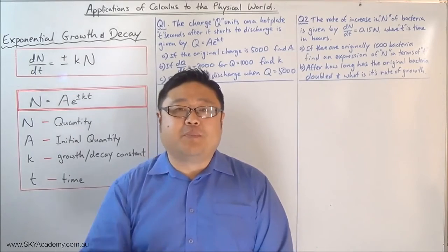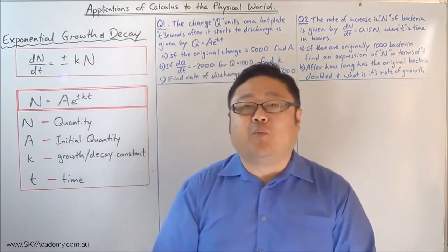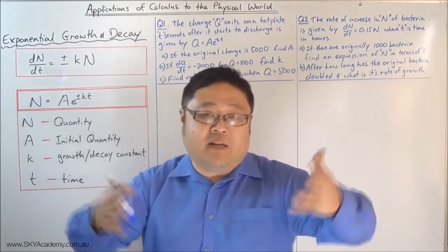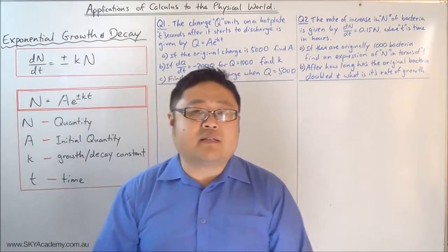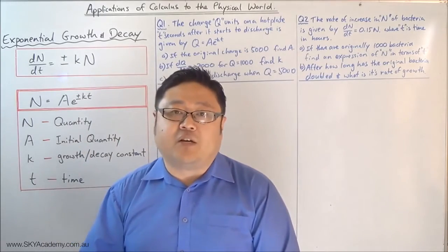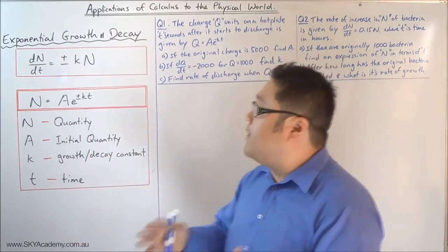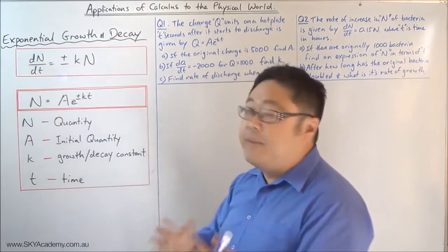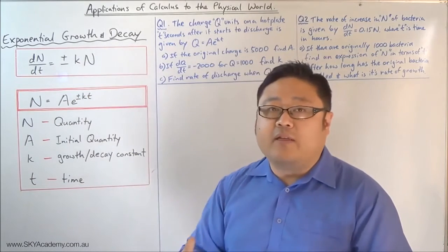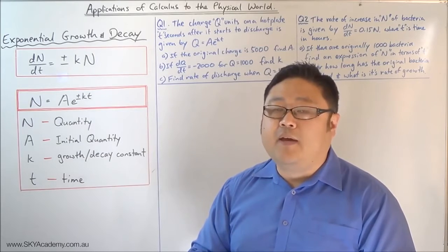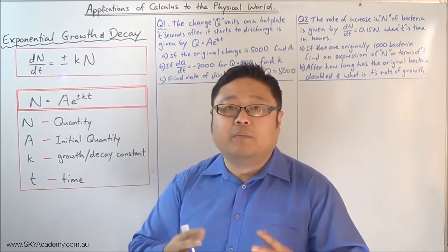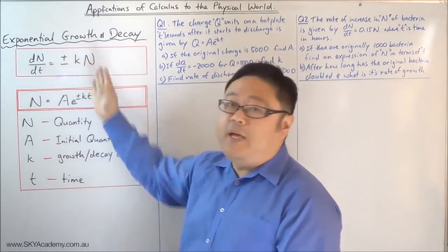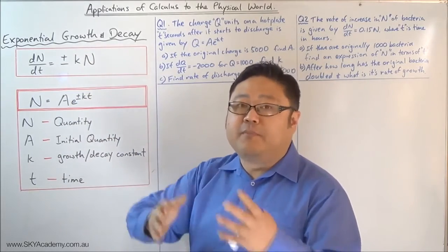Hi, this is Soong and I'm the principal and director of Sky Academy. In the last episode we looked at growth and decay, and we worked out that growth and decay as we find it in nature and the real world is usually of an exponential nature, because growth and decay follows the principle that the rate at which something grows or decays will be proportional to the amount of that quantity at that point in time.